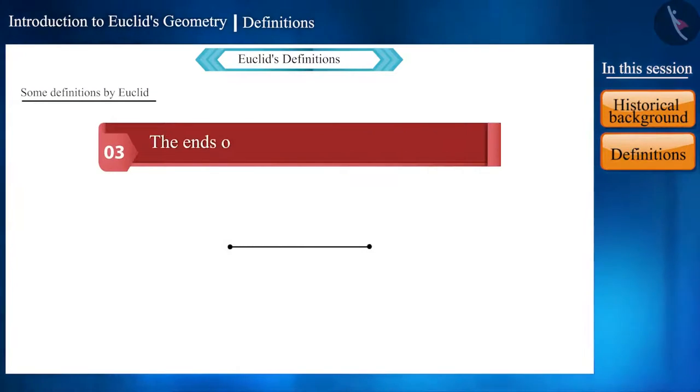The third definition is, both the ends of a line are points. Point is where the line ends.